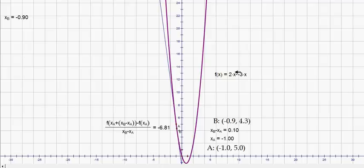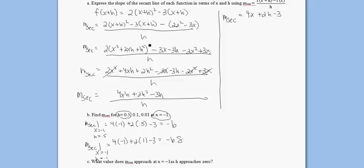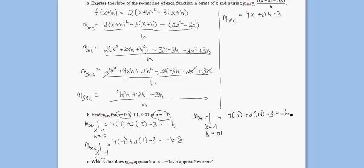So the slope of this secant line on this function through x equals negative 1, with the second point being 0.1 away to the right at x equals negative 0.9, is negative 6.8. Finally, let's find the last one when h is even smaller at 0.01. The slope at x equals negative 1 and h equals 0.01 is 4 times negative 1 plus 2 times 0.01 minus 3, which equals negative 6.98.